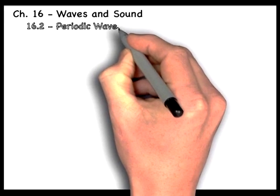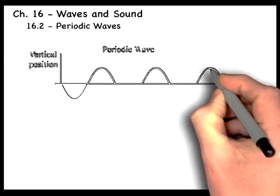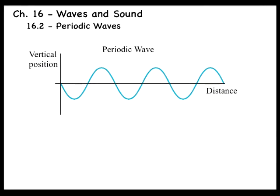The transverse and longitudinal waves that we have been discussing are called periodic waves because they consist of cycles or patterns that are produced over and over again by the source.